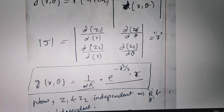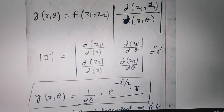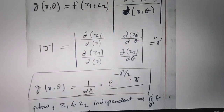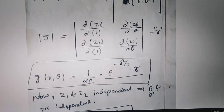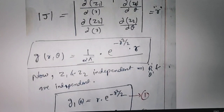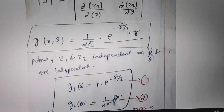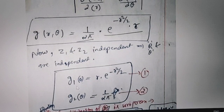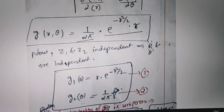So combining the Jacobian result, we can write this in the simple form: 1 over 2π multiplied with e to the power minus r squared over 2, times r. Since z1 and z2 are independent, r and theta are also independent. Using that concept, we can simply write g1 of r equals r times e to the power minus r squared over 2, and g2 of theta equals 1 over 2π.